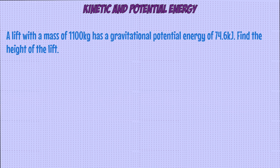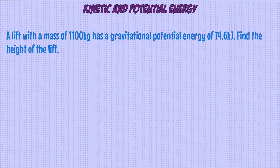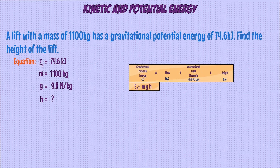Let's try a question with this equation. We have a lift with a mass of 1,100 kilograms with a gravitational potential energy of 74.6 kilojoules, and we want to find out the height of the lift. The information we have is a gravitational potential energy of 74.6 kilojoules, a mass of 1,100 kilograms, and the gravitational field strength on Earth is 9.8 newtons per kilogram — that value would be given to you in any exam. Height is what we're trying to find out, so we identify that the equation we want to use is the gravitational potential energy one.